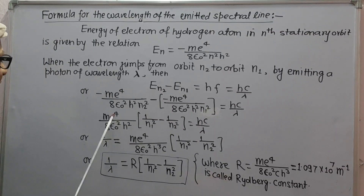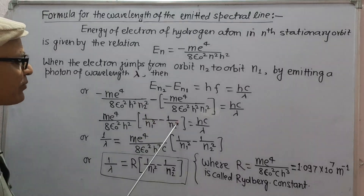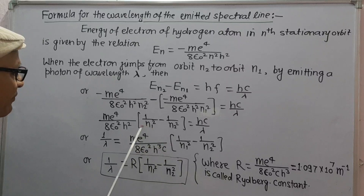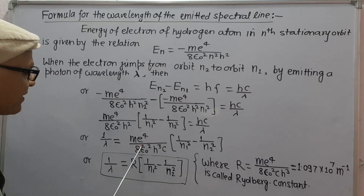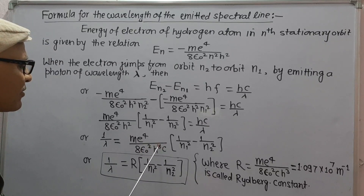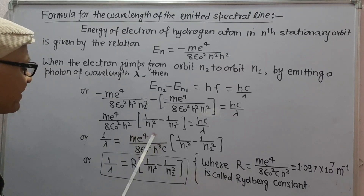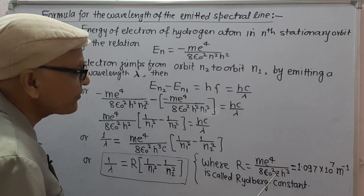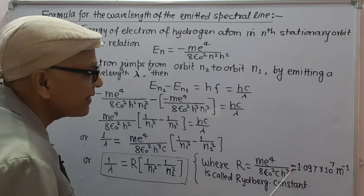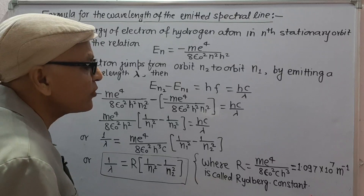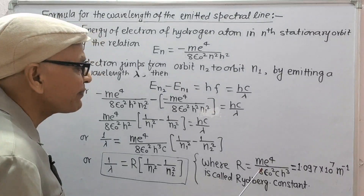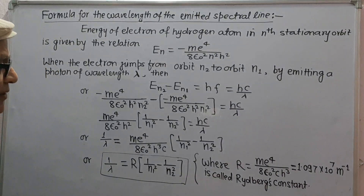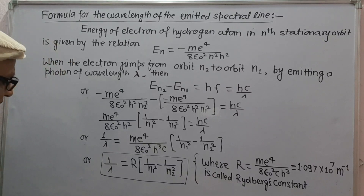Therefore 1/λ = me⁴/(8ε₀²h³c) × (1/n1² − 1/n2²). The constant me⁴/(8ε₀²ch³) can be replaced by another constant capital R, where R = me⁴/(8ε₀²ch³), which gives the value 1.097 × 10⁷ per meter. This constant R is known as Rydberg's constant. So the relation is 1/λ = R × (1/n1² − 1/n2²).